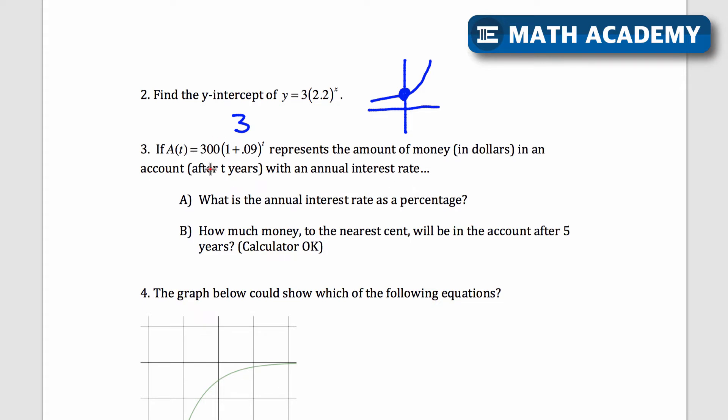So what this is telling me is that it looks like I'm starting with $300. And that's being multiplied by 1 if I combine this 1.09 to the power of t. So after one year, it's 300 times 1.09. After two years, it's 300 times 1.09 times 1.09 because I'd be squaring 1.09. So every year, I'm multiplying by 1.09, which means that the annual interest rate would be 9%.